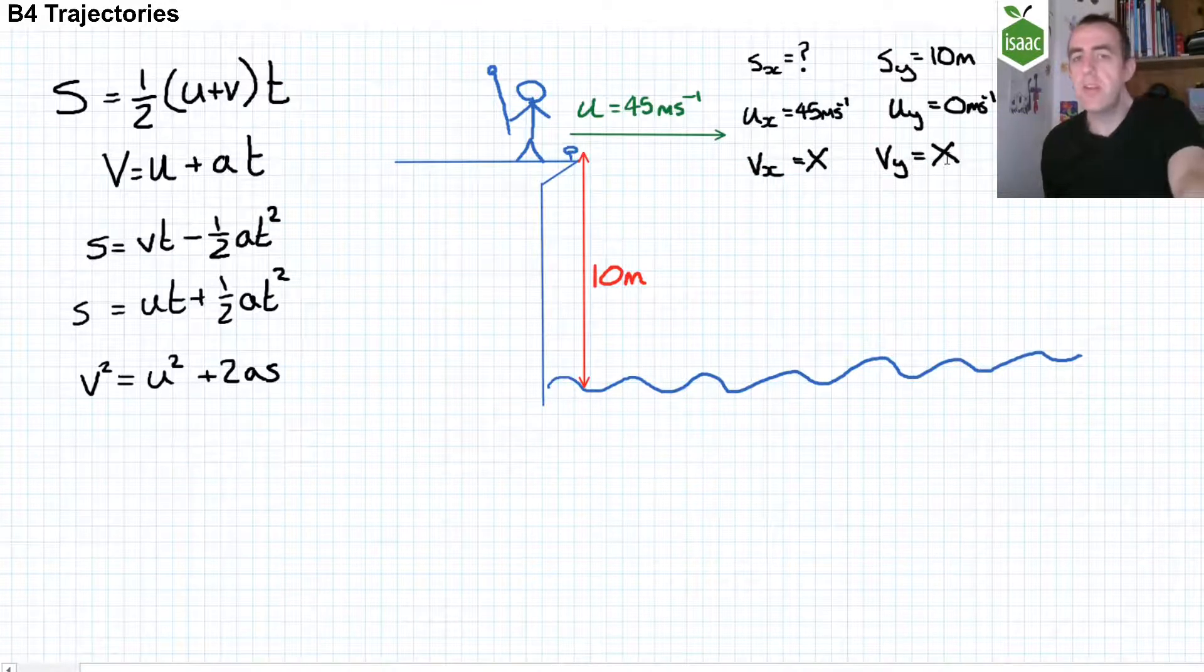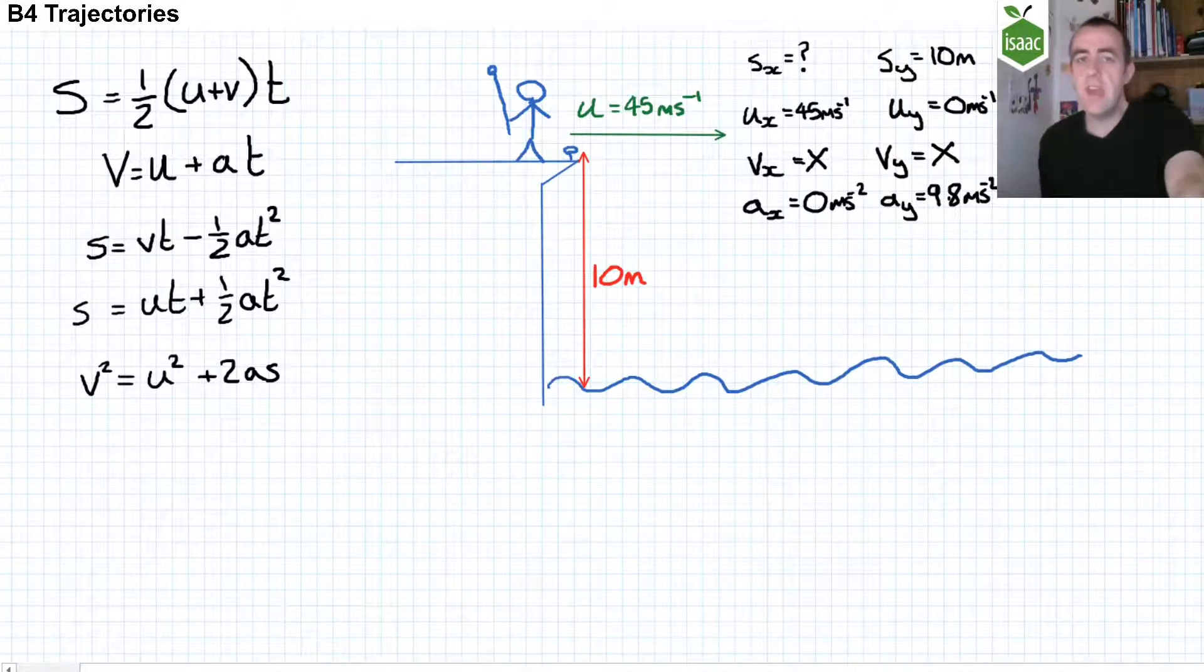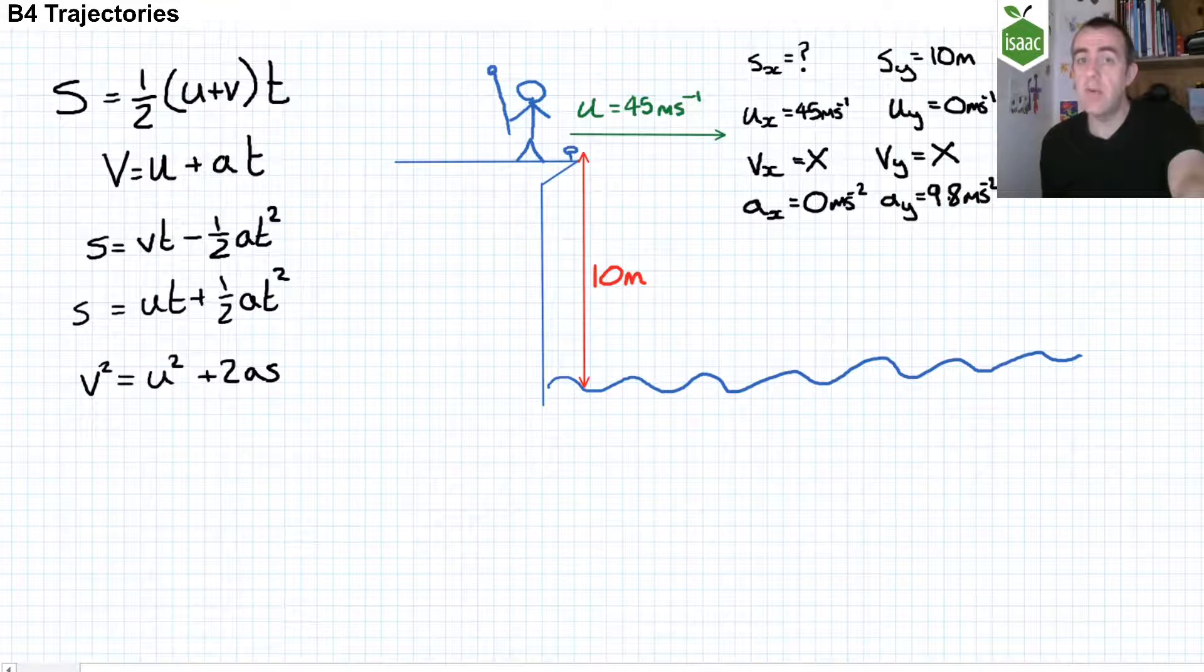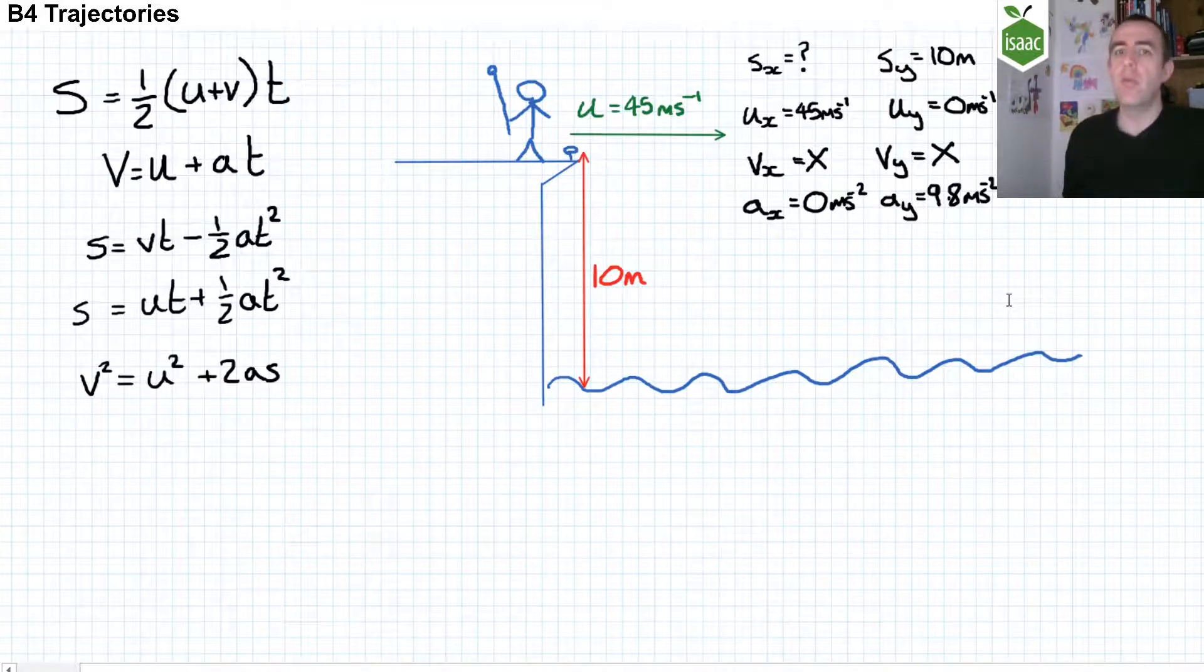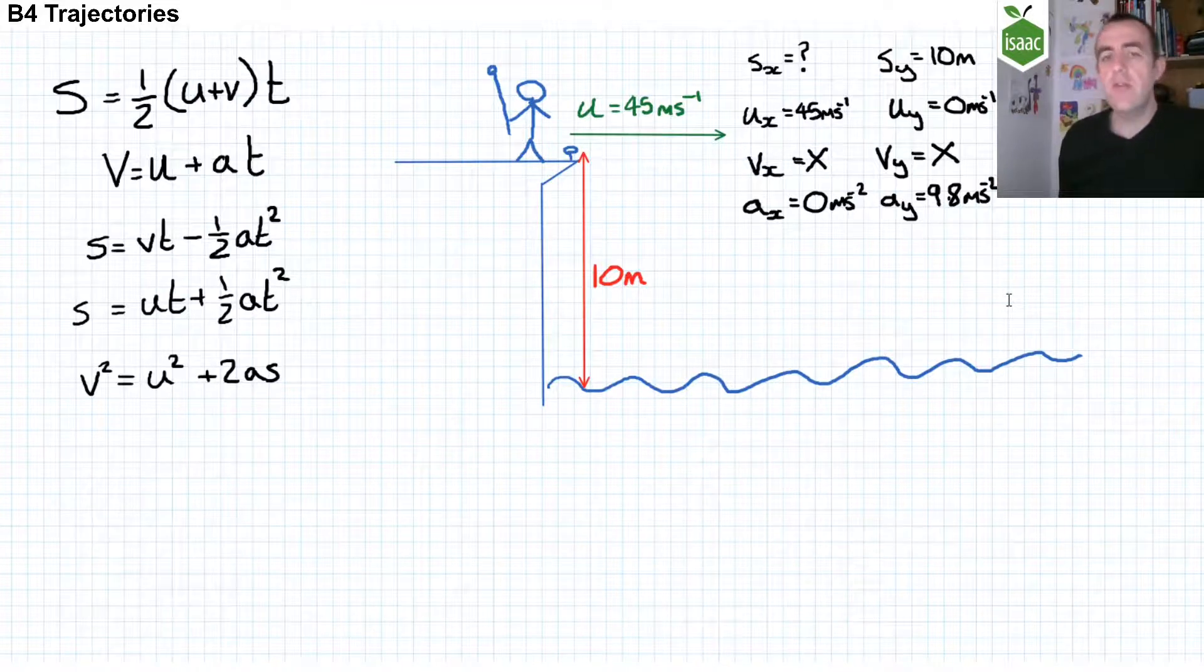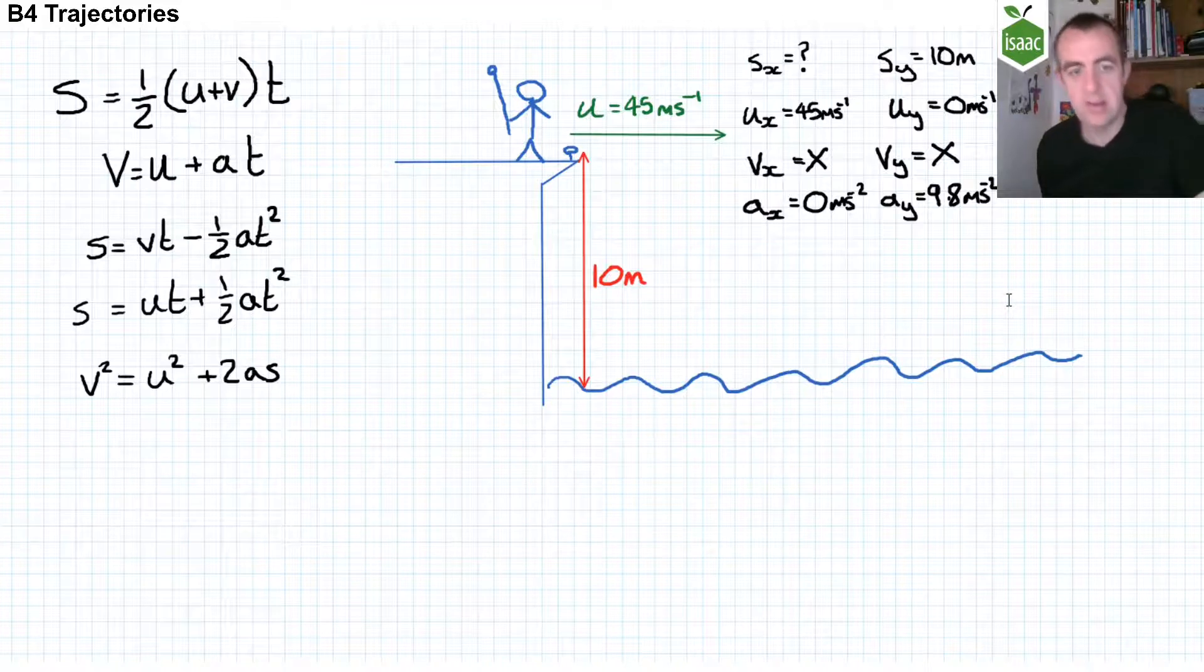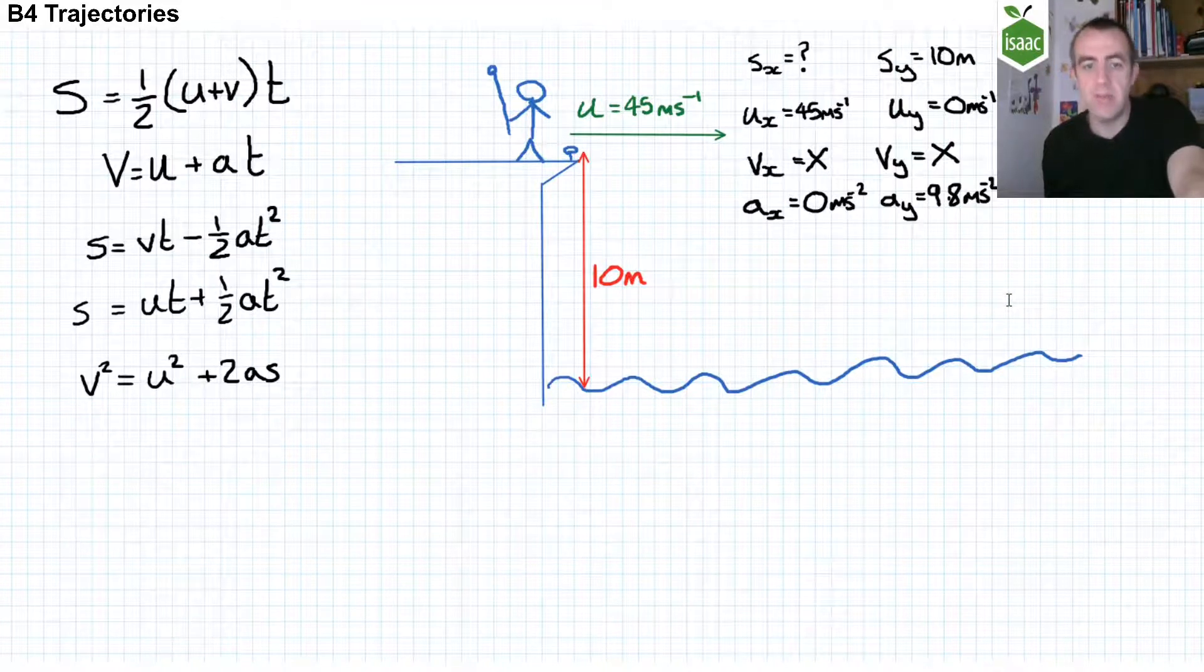I'm not interested in the final velocity of this ball in any direction. The acceleration in the x-direction is 0 meters per second squared. In the y-direction, it's negative 9.8 meters per second squared. But we're defining downwards as positive because the ball is being displaced positively 10 meters. And so I've chosen downwards to be my positive direction in the y-axis. So I've written a_y equals positive 9.8 meters per second squared.